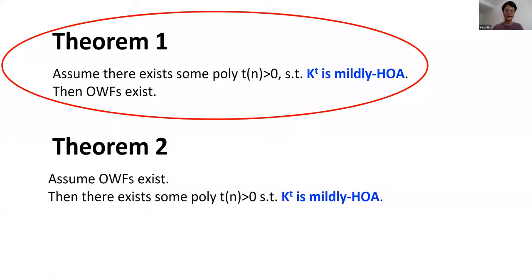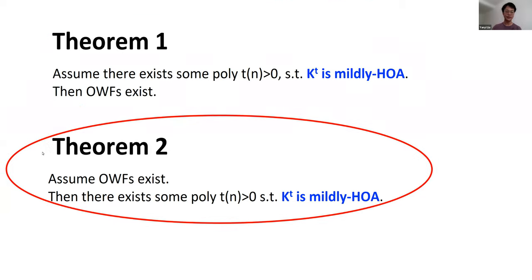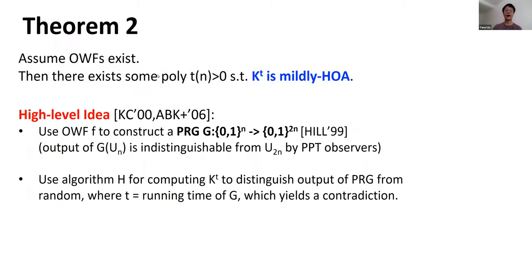Now let us look at the proof of Theorem 2: assume one-way functions exist, then there exists some polynomial t such that KT is mildly hard on average. Our high-level idea is: first, use a one-way function f to construct a PRG g that maps m bits to 2m-bit strings; second, use an algorithm H for computing KT to distinguish the output of g from random, where t is set to be the running time of g — yielding a contradiction. On a uniform string, KT is large with high probability because the number of Turing machines of length 2n − log n is at most 2^(2n − log n), which is sparse among all 2n-bit strings.